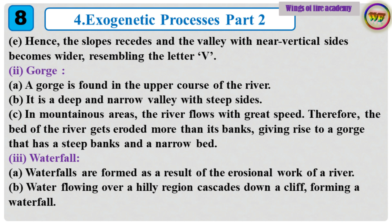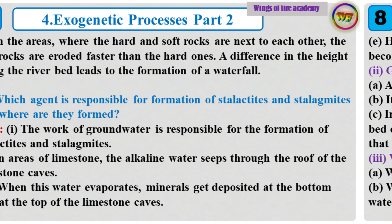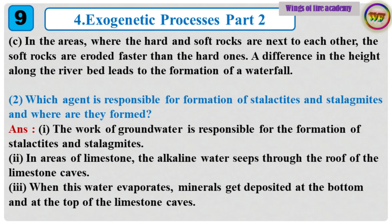3. Waterfall. Waterfalls are formed as a result of the erosional work of a river. Water flowing over a hilly region cascades down a cliff, forming a waterfall. In areas where the hard and soft rocks are next to each other, the soft rocks are eroded faster than the hard ones. A difference in the height along the river bed leads to the formation of a waterfall.